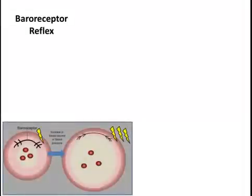Another example of a reflex arc found within the human body is the baroreceptor reflex. As we saw before, baroreceptors are mechanoreceptors that monitor blood pressure. These receptors are embedded in the walls of major blood vessels, primarily in the aortic arch and carotid sinus. Baroreceptors are embedded in the wall of the blood vessel and can be stretched as the blood vessel is exposed to increasing blood pressures and/or blood volume.